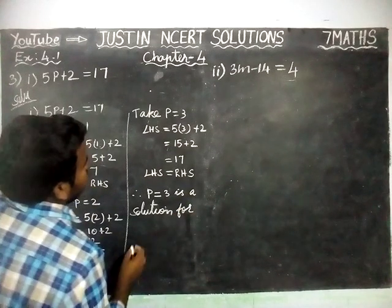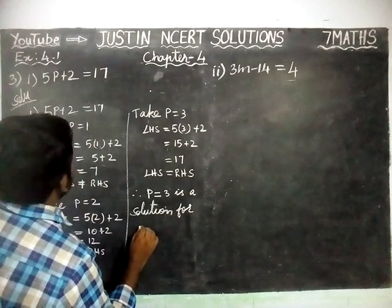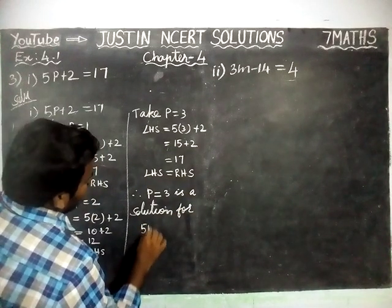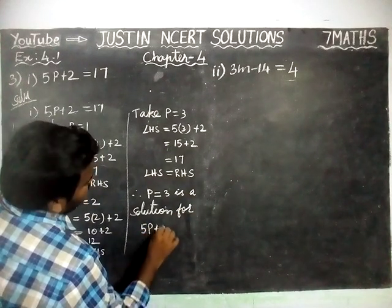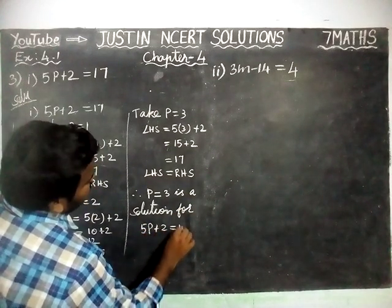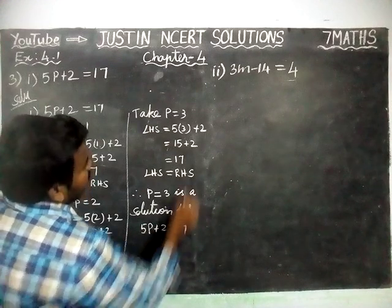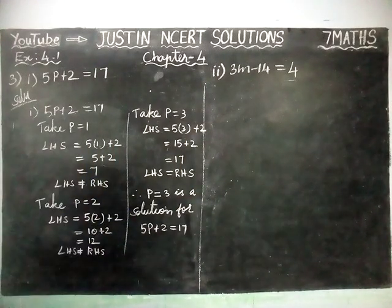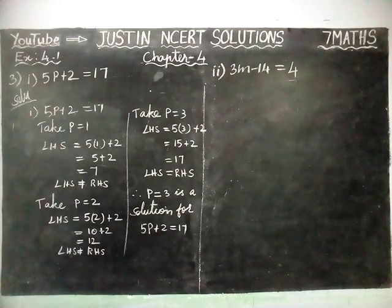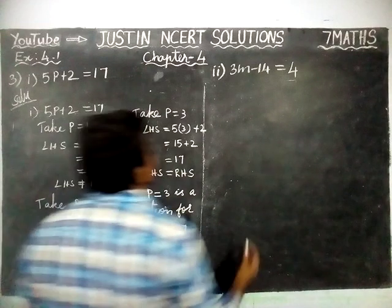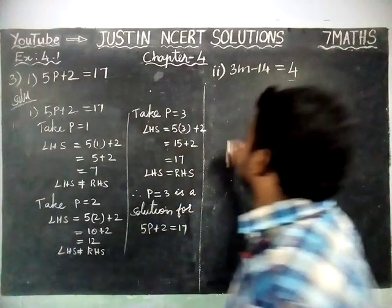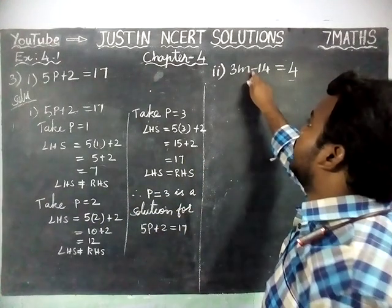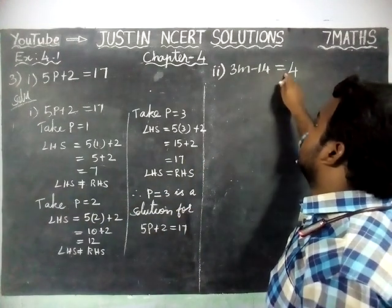Solution for the equation 5P plus 2 is equal to 17. Now we are going to solve the second equation: 3M minus 14 is equal to 4.